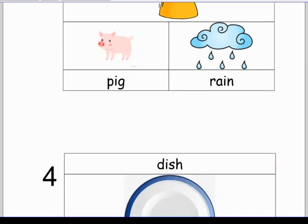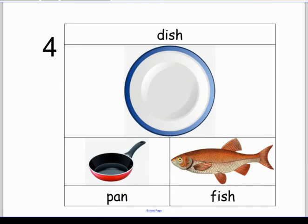All right, let's go to the fourth picture. This is the word dish. Which word on the bottom rhymes with dish? Is it pan or fish? Dish, pan, dish, fish. Draw the picture that rhymes with dish - is it pan or fish?